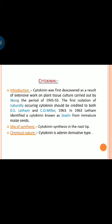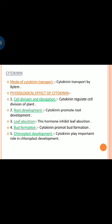Cytokinin is synthesized in the root tip. It is adenine derivative in chemical nature and is transported via the xylem. Physiological effects of cytokinin include: it regulates cell division of plants, promotes root development, inhibits leaf abscission, promotes bud formation, and plays an important role in chloroplast development.